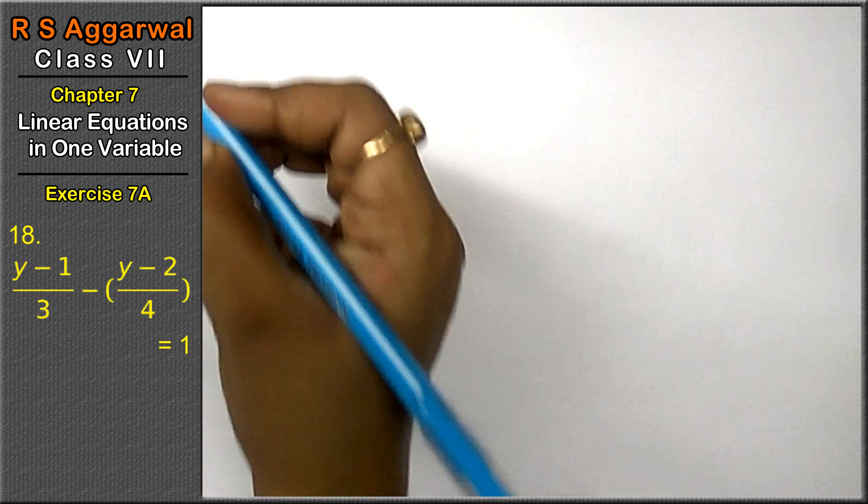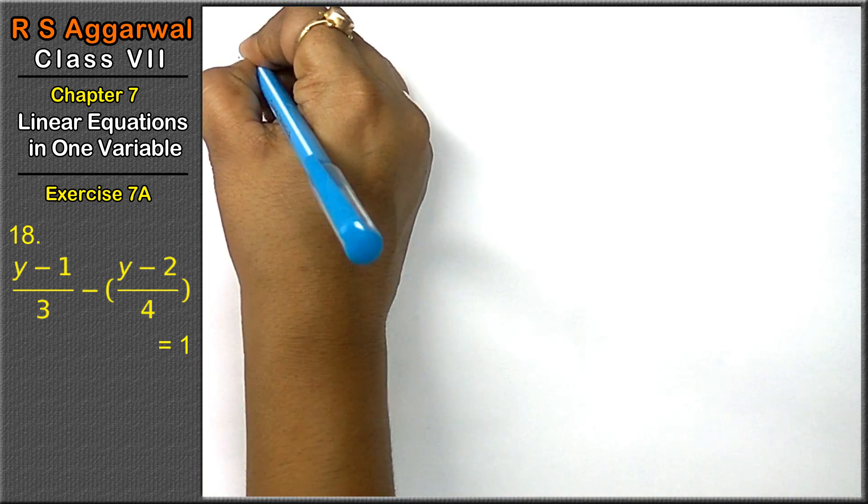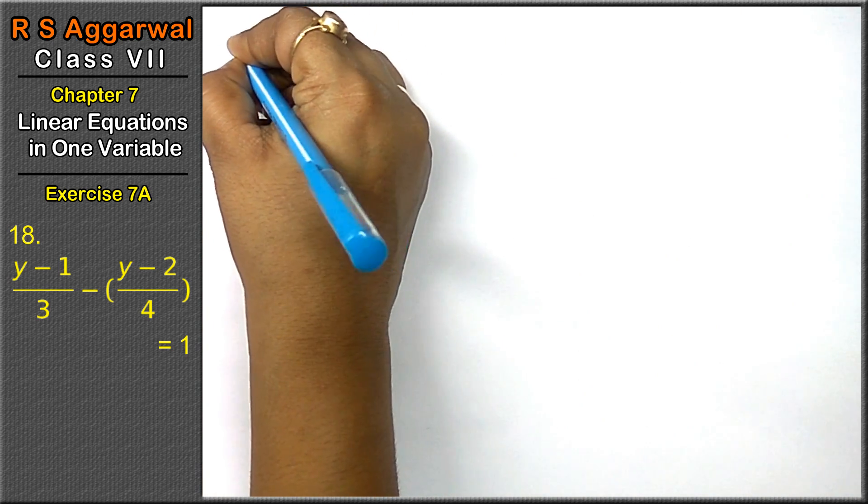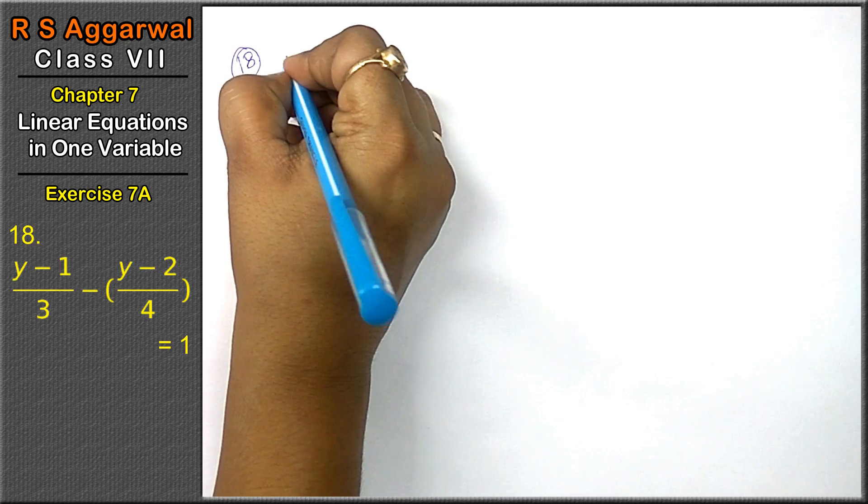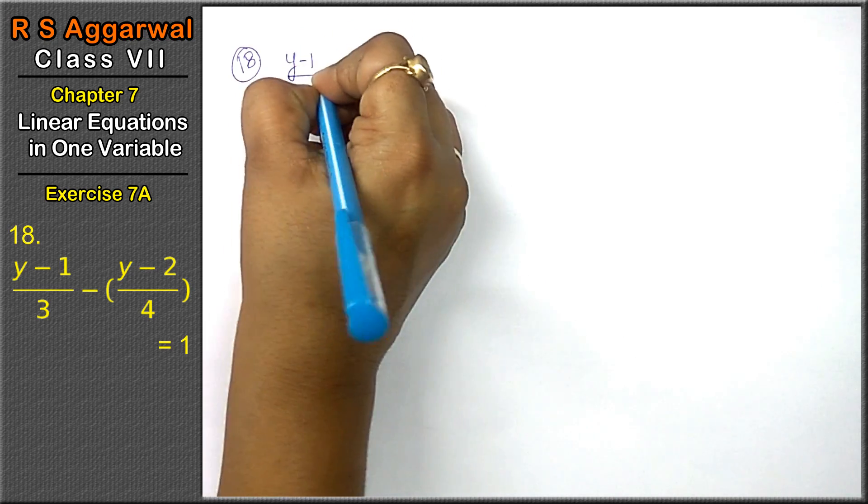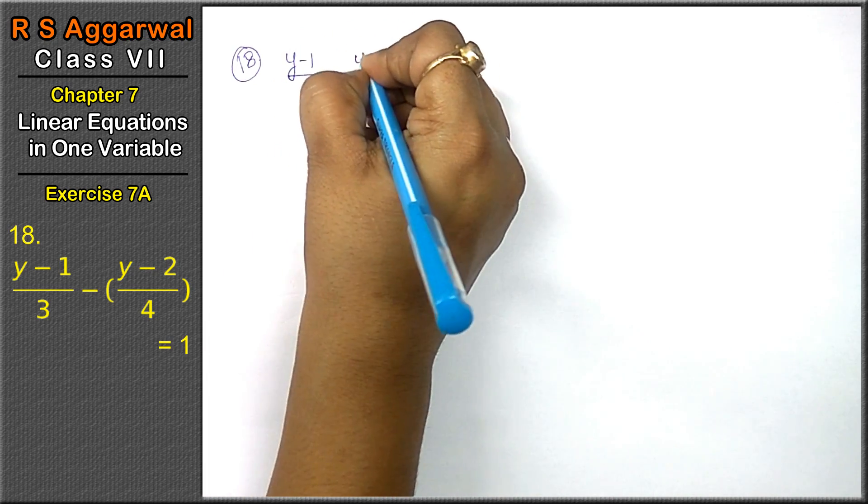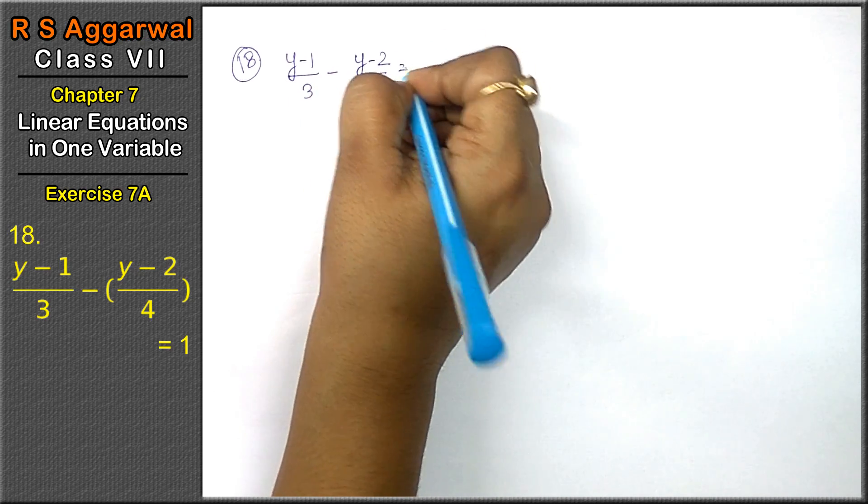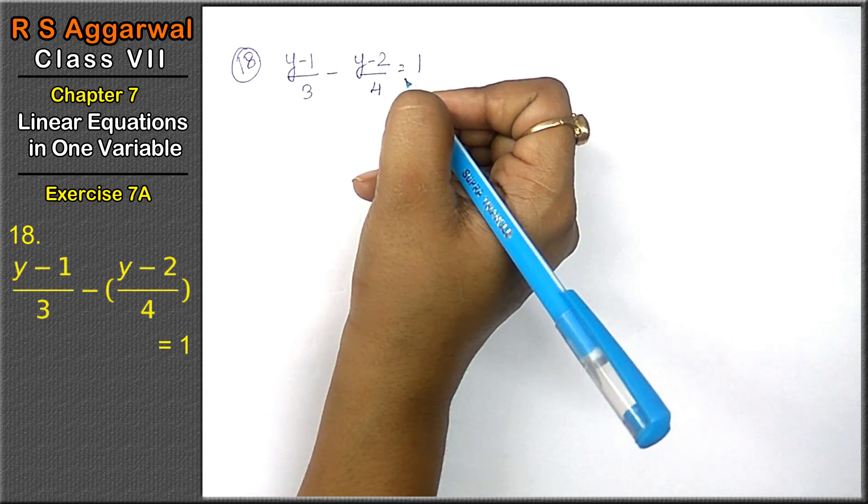Question number 18 is (y-1)/3 - (y-2)/4 = 1. Friends, let's take the y terms on one side and non-y terms on the other side.